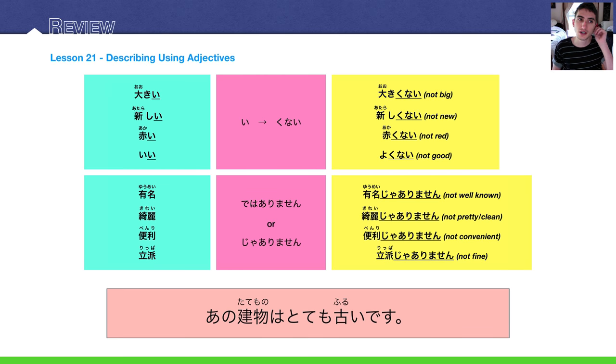Lesson 21, we're talking about adjectives now. We have a bunch of adjectives that we introduced and how to conjugate them. You can conjugate adjectives. Let's focus on the negative conjugation of adjectives for now. We got a few here. Ookii, atarashii, akai, ii - big, new, red, good.